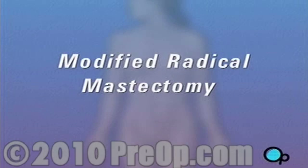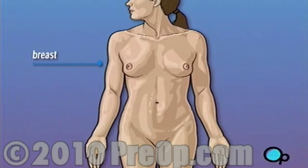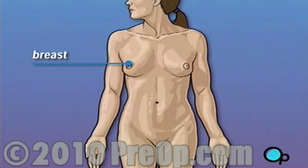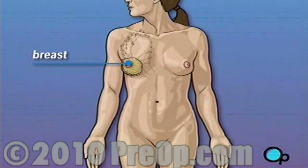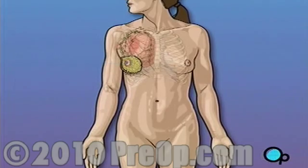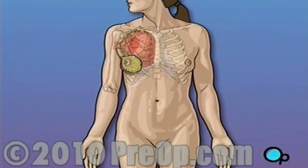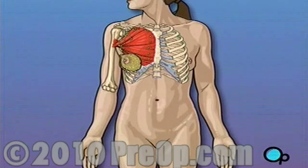Your doctor has recommended that you have a modified radical mastectomy. But what does that actually mean? Traditionally, a radical mastectomy called for the removal of the breast, surrounding tissue, and even the chest muscle below. A modified radical mastectomy is a procedure in which the breast and surrounding tissue are removed while leaving the chest muscle intact.